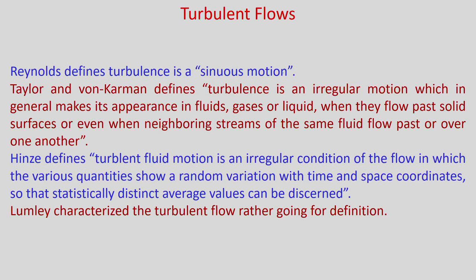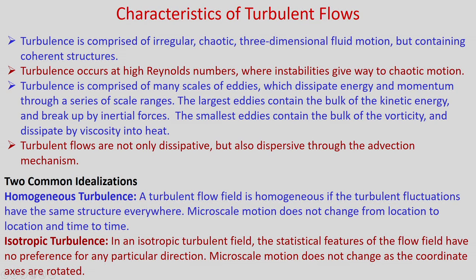Scientists have characterized turbulent flows in various ways. Reynolds defines turbulence as a sinuous motion. Taylor and von Kármán define it as an irregular motion appearing in fluids — gases or liquids — when they flow past solid surfaces or when neighboring streams of the same fluid flow past one another. Hinge defines turbulent fluid motion as an irregular condition where various quantities show random variation with time and space coordinates such that statistically distinct average values can be discerned. Lumley characterizes turbulent flow rather than defining it.